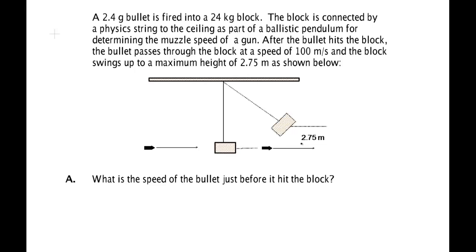After the bullet hits the block, the bullet will pass through the block at a speed of 100 meters per second in our particular problem. The block will swing up to a height of 2.75 meters as shown below. What is the speed of the bullet?